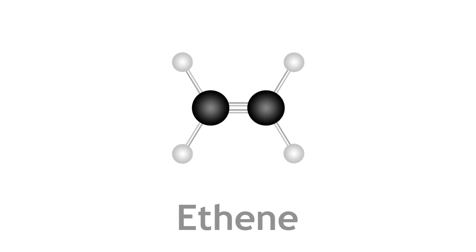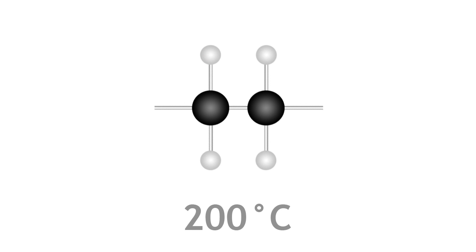Ethene is an alkene with two carbon atoms joined by a double covalent bond. Polymerization occurs when this double bond breaks at a temperature of around 200 degrees C and a very high pressure of 2000 atmospheres.